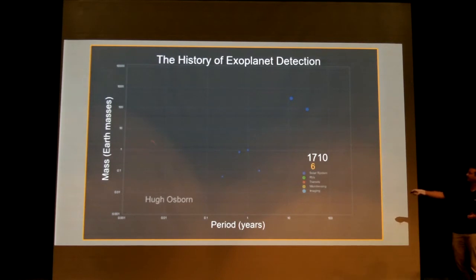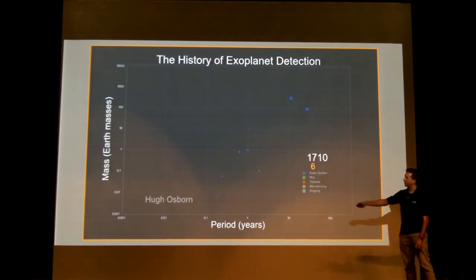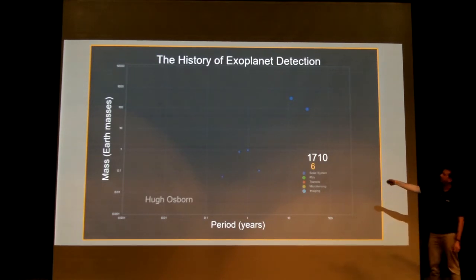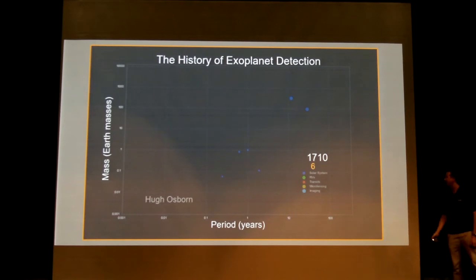And this is the mass of the planet here. Again on a logarithmic scale, so that's one Earth mass, ten Earth masses, a hundred Earth masses, ten percent of the Earth mass. So roughly, this is going to be where very close, very small planets are, very close, very large planets, very far away, very large planets, and very far away, very small planets. And back in 1710, this is the number of planets we knew, just our solar system planets, missing a couple. So if I start the animation, you can see in 1985, we discovered the first exoplanet, using that radial velocity technique.